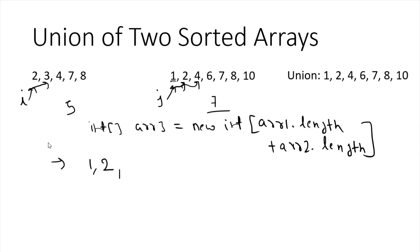Now i is smaller so we put 3 into the new array and increase i. Again both values match at 4, so put that value into the new array and increase both i and j by 1. The logic is: if a value is smaller than the other, put that value into array 3 and increase that index. If both values are the same, take only one value, put it in the new array, and increase both indexes.